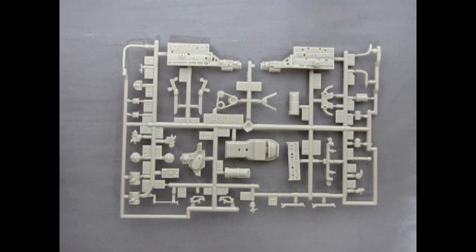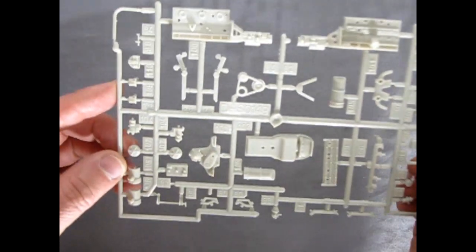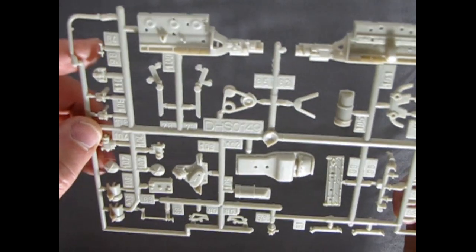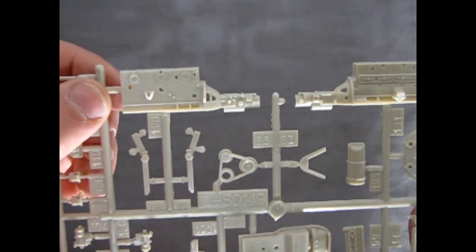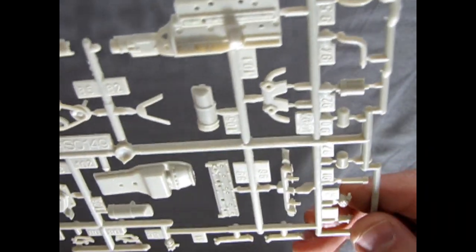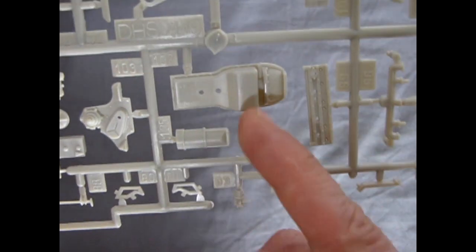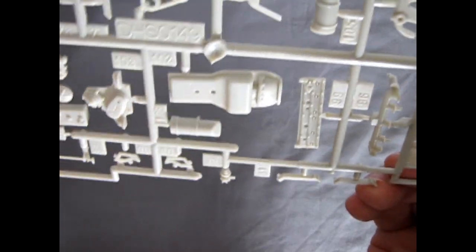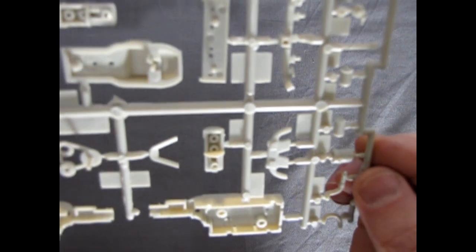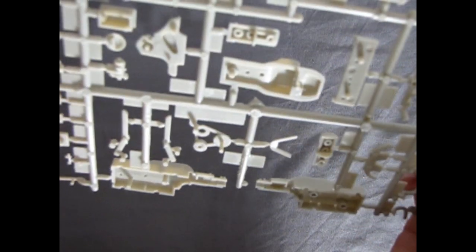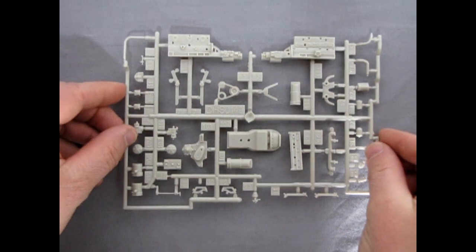Our first parts tree includes all the components to build our engine as well as some under hood details. And again you can see the molding on this is excellent. Just take a look at that Twin H power engine as well as our cylinder head here. There's our oil pan and transmission cover. Again very nicely done. Underneath of course very good from this end too. A couple of little mold marks but these should not present much of a problem.